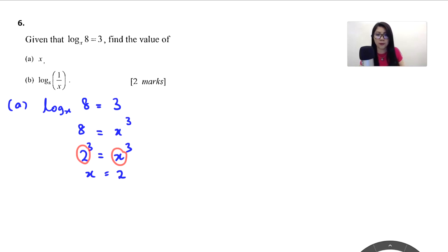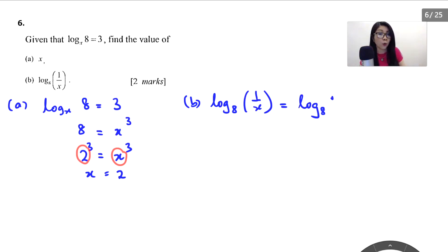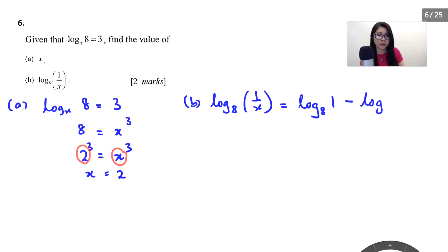Now let's solve part B: log base 8 of (1 over x). I'm going to split it up into log base 8 of 1 minus log base 8 of x. Why minus? Because it's 1 divided by x — that gives log base 8 of 1 minus log base 8 of x.